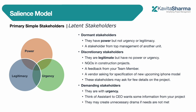What you see on screen is a Venn diagram. The salience model divides stakeholders into seven types. The first three are called latent stakeholders — these are stakeholders with only one dimension. For example: entities with only power, entities with only legitimacy over the project, and entities with only urgency who want things done quickly.